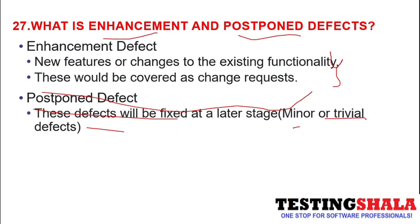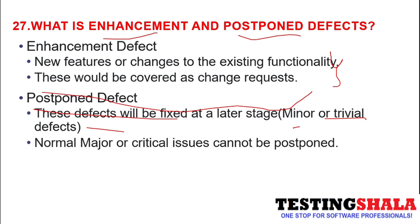Postponed defects are defects that will get fixed in future releases because they are very minor and trivial. It may happen that these defects might get fixed or might not get fixed — a decision will be taken at the latest stage of the given release.